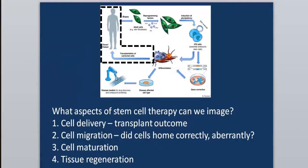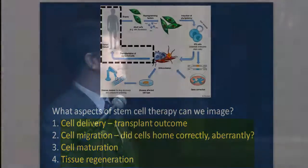What aspects of stem cell therapy can we image? We can image cell delivery to know the immediate transplant outcome of cell therapies. We can image cell migration — did they home correctly to the right spot or aberrantly to the wrong spot? We can image cell maturation, where immature cells are delivered and allowed to develop endogenously into adult cells. We are designing agents that will allow imaging to non-invasively detect this, and also looking at whether we have regenerated the tissue mass we're interested in.